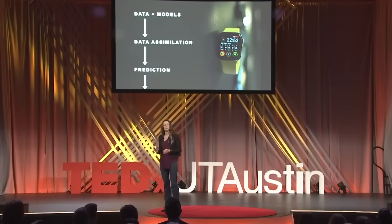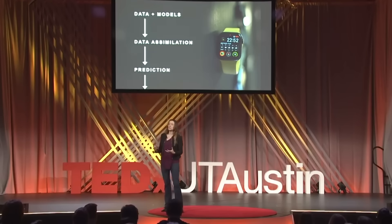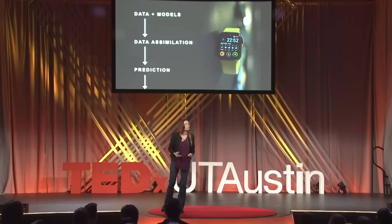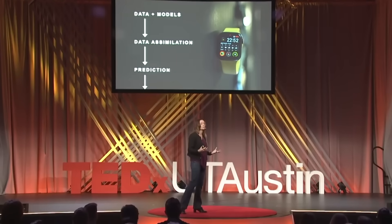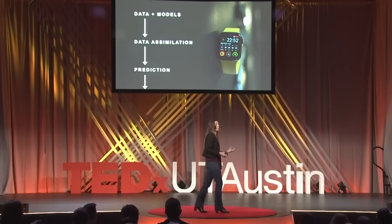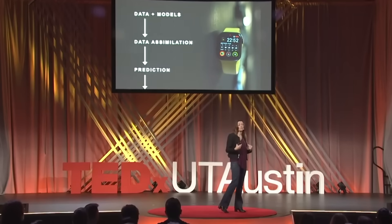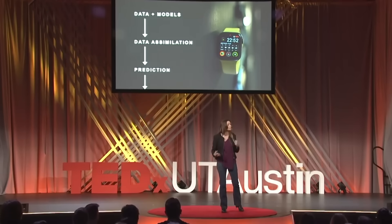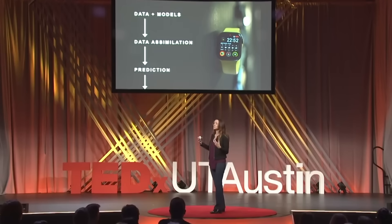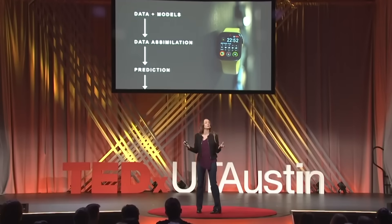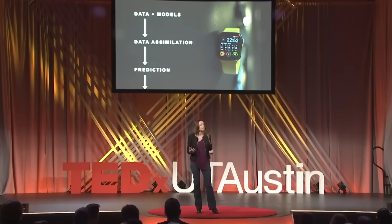Data assimilation is really important because it's what personalizes the models to me. And that gets us to the fourth element: prediction. Now that I have these personalized models, it's so powerful because I can get predictions or recommendations that are tailored to me as an individual and tailored to my dynamically evolving state over my life. This working together of data and models is likely very familiar to all of you because it's been driving your personal choices in retail and entertainment and wellness for many years.